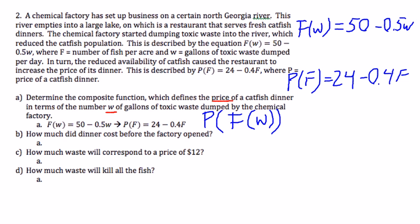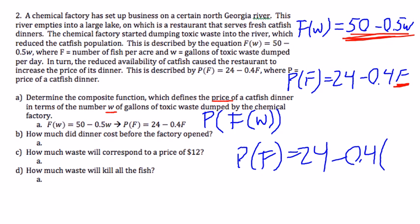So we can look at our function for P, and everywhere we see an F, we can just replace that with F of W. So we're going to have something like P of F equals 24 minus 0.4 parentheses, but instead of putting F in the parentheses,